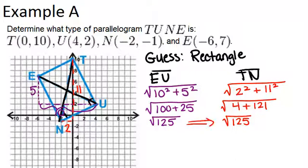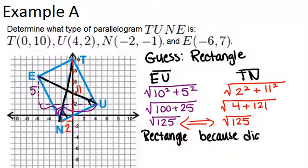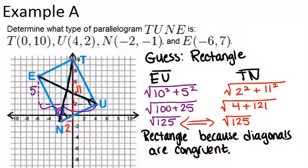So look, the two diagonals are the same length. They're both the square root of 125. So that means that we're right. It is a rectangle because the diagonals are congruent. And we've shown our work, so it's clear that the diagonals are actually congruent. All right, let's go to example B.